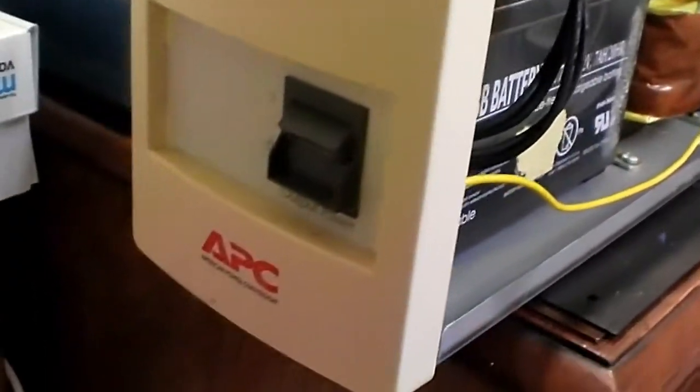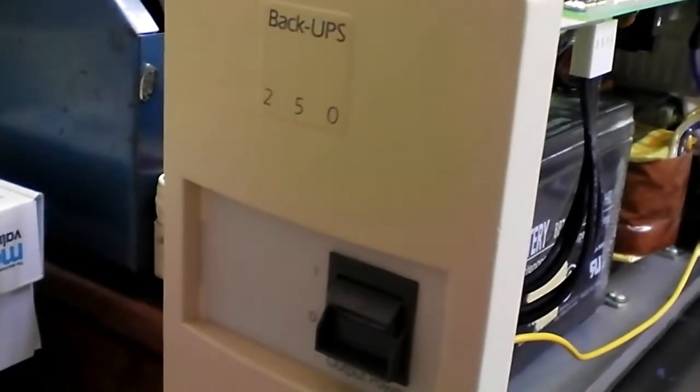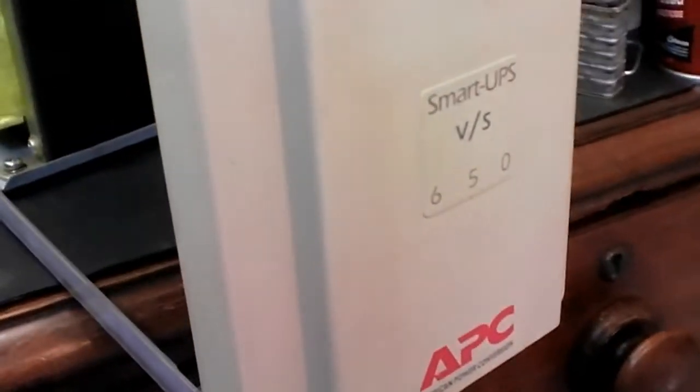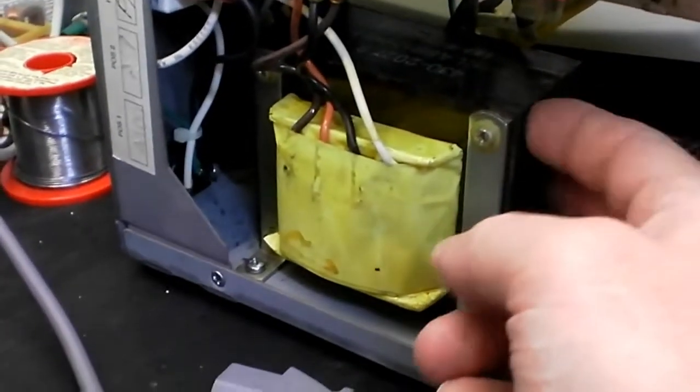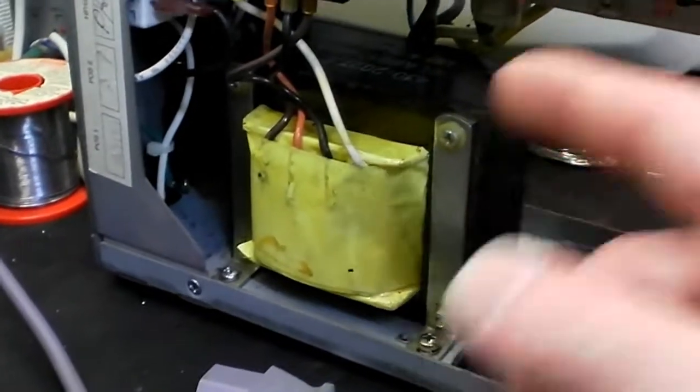So this is quite a small UPS. This is just a 250 VA, very small one. This is a 650 VA one. But they use this transformer in reverse to charge the battery.